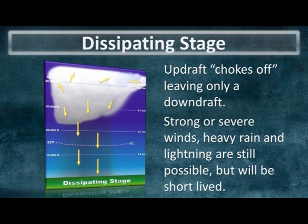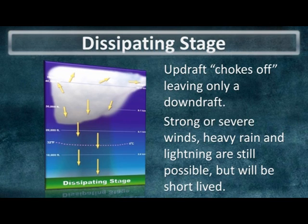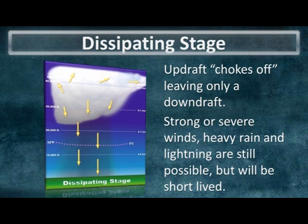In the final stages of a thunderstorm's life cycle, the updraft is overcome by sinking air and essentially becomes choked off. Shortly after the updraft dissipates, there is still a layer of rain aloft that will end up falling to the ground within the downdraft. So even though the storm may appear to be done with, strong or severe winds, heavy rain, and lightning are still possible during this stage, but these will be short-lived as the storm has already lost its updraft.